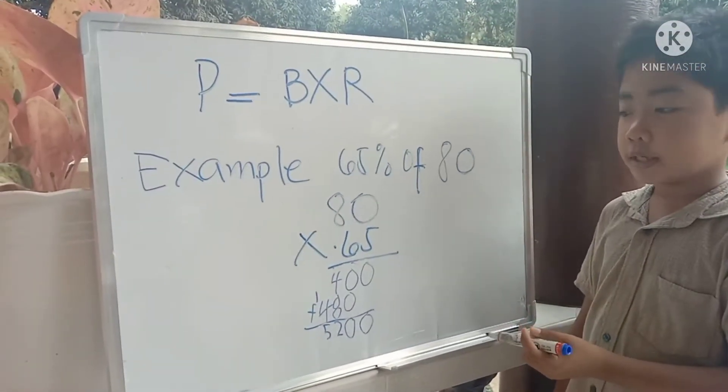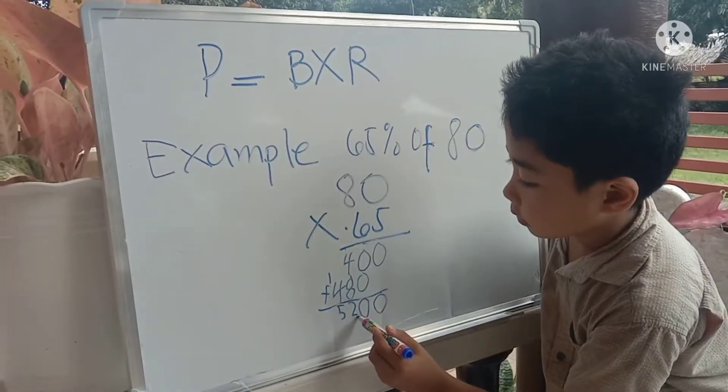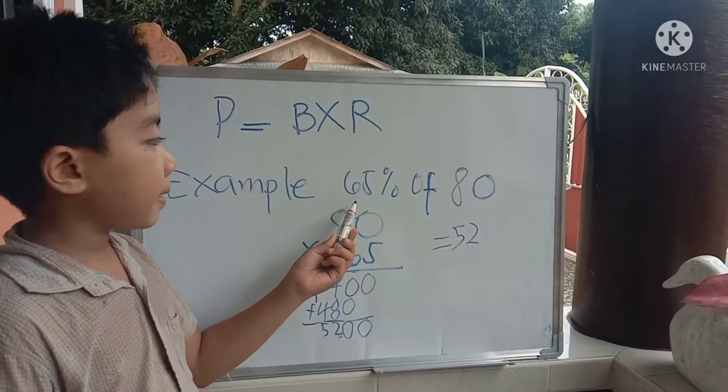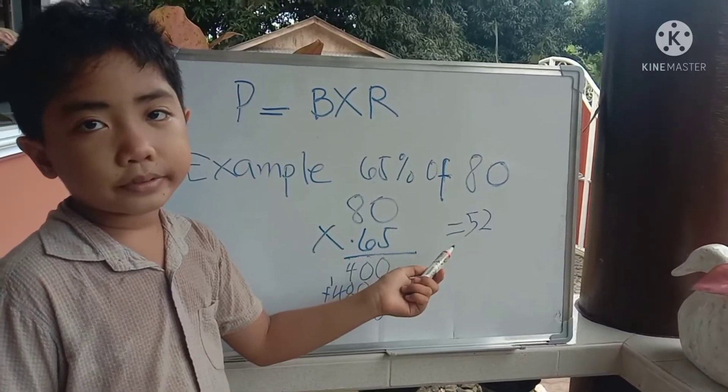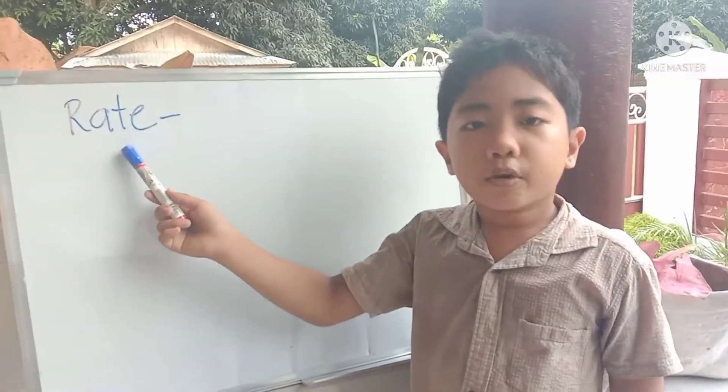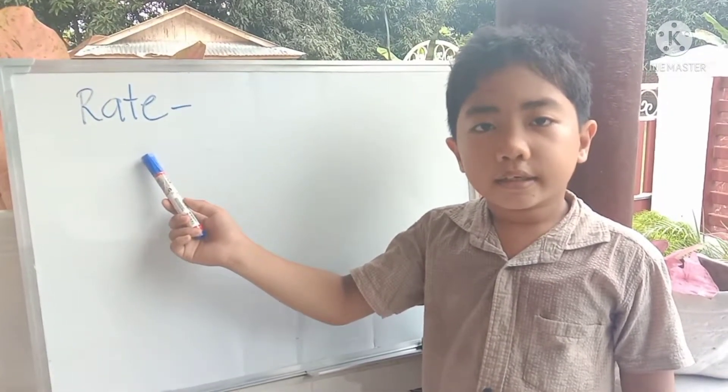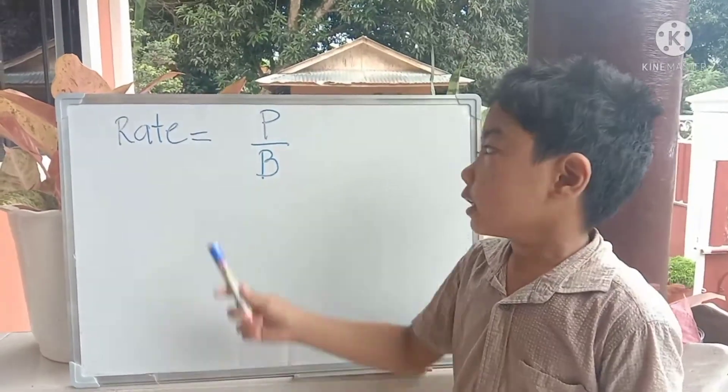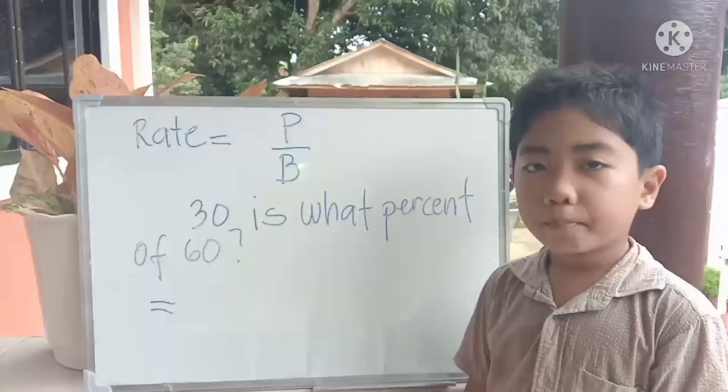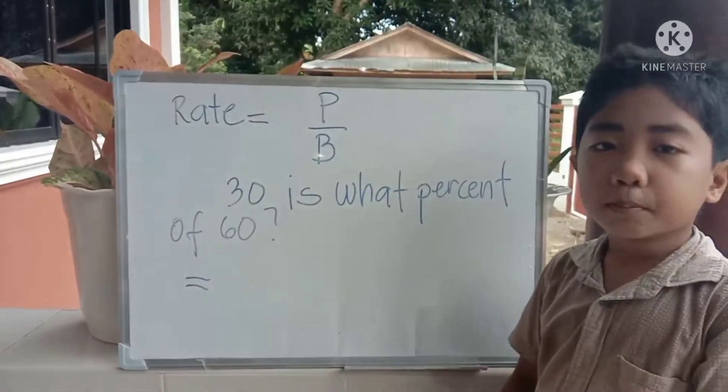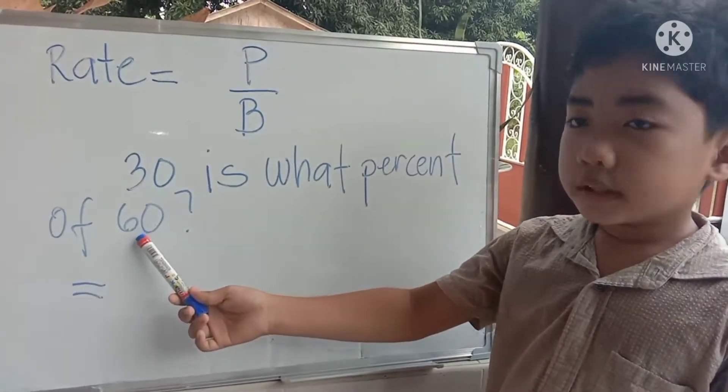Let's count the number of decimal places. 1, 2. 65% of 80 is 52. Rate is the number compared to 100. It usually has a percent sign. Finding the rate equals percentage over base. 30 is what percent of 60? 30 is the percentage. 60 is the base.